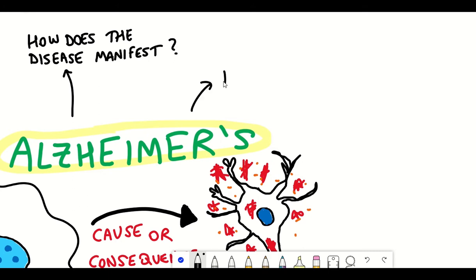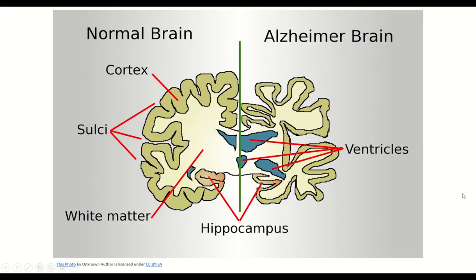To be able to do this though you need to understand the molecular characteristics and processes involved in the progression of Alzheimer's disease, which is easier said than done.